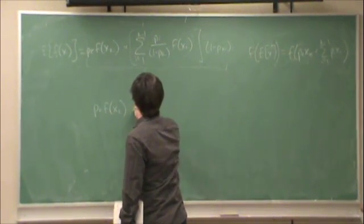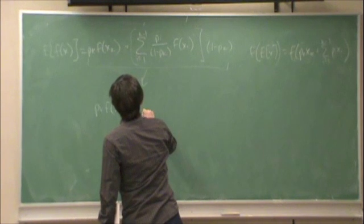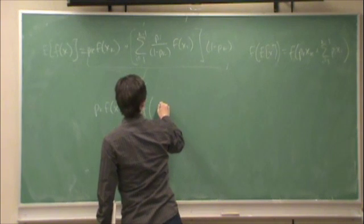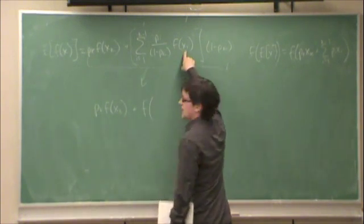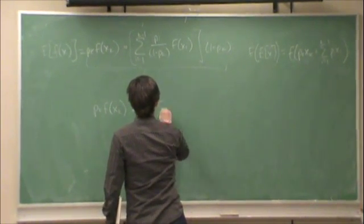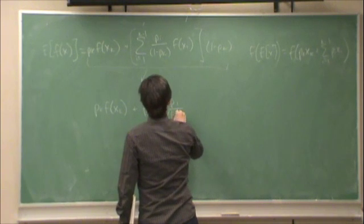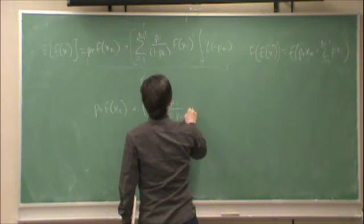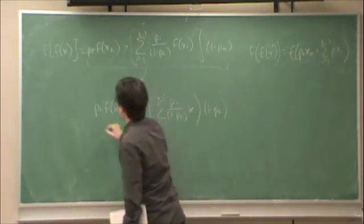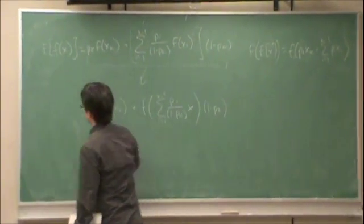We already supposed that this, by the inductive assumption, this is less than or equal to f of the expected value of x over those same k-1 letters. So this is f of sum from i equals 1 to k-1, pi over 1 minus pk, x, times 1 minus pk. So this is less than or equal to this, by the inductive assumption.